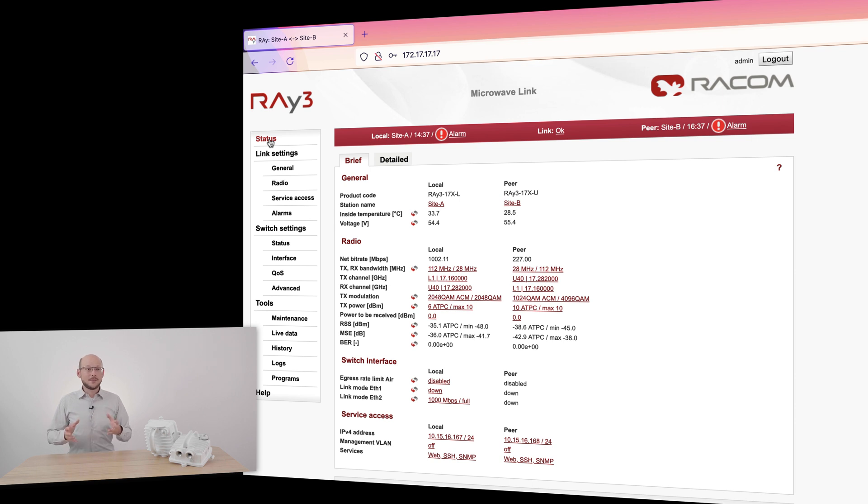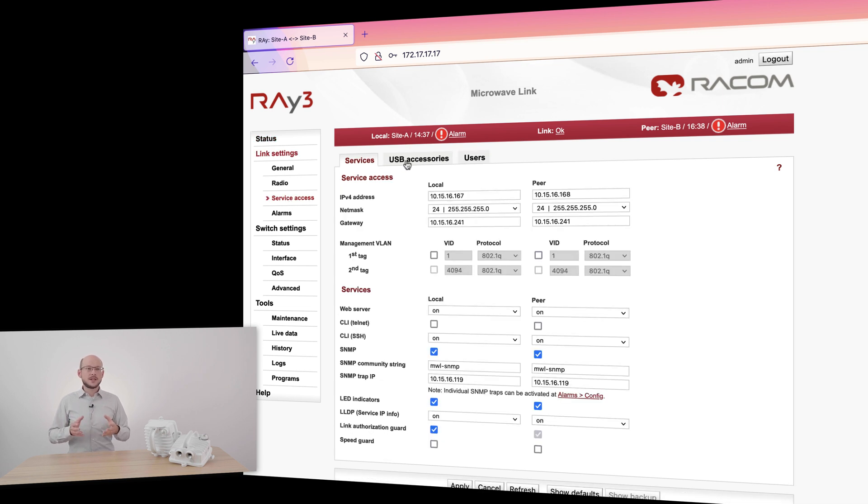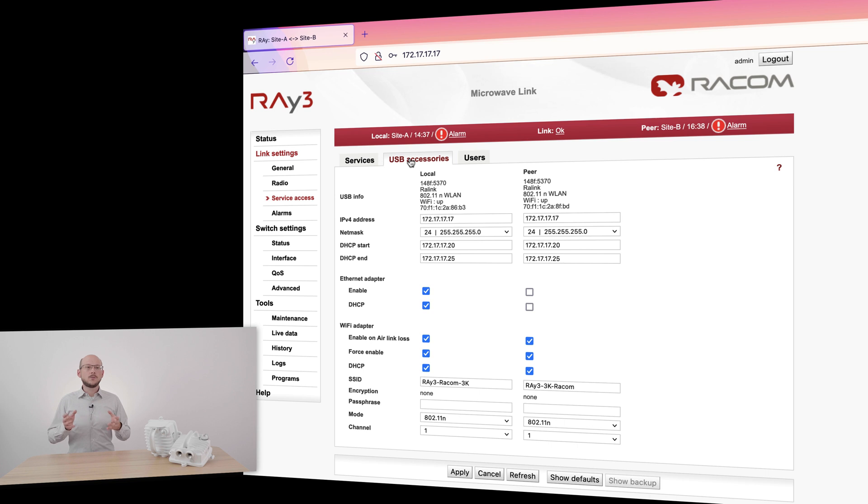The last step is disabling service Wi-Fi to improve security of the link. Go to Service Access, USB Accessories and Disable Force Enable, and Enable on Air Link Loss to simplify servicing in case of link problems. Remember that this step disconnects you from service Wi-Fi.